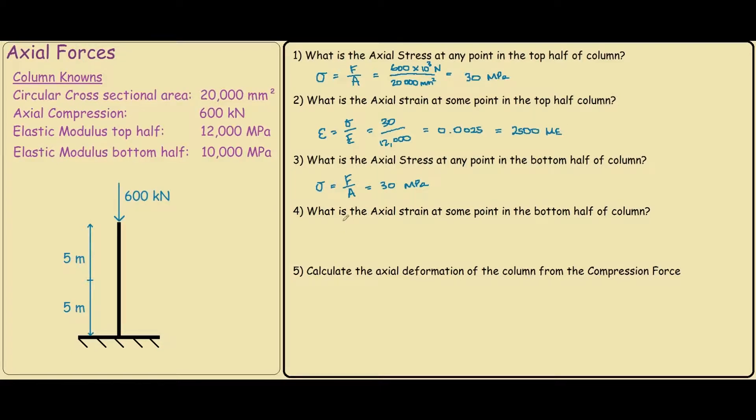For question 4, we are still using the same formula, epsilon equals stress over elastic modulus. The stress here at the bottom half is also 30 MPa. And the elastic modulus for the bottom half is given as 10,000 MPa. So you work this out, it equals 0.0030 or 3,000 microstrains.